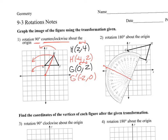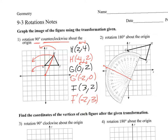Now we do the same thing with I. I has coordinates 3, 2. So what happens? We switch the X and Y, and then in the second quadrant, X is negative. So those are your new points. We plot those points.